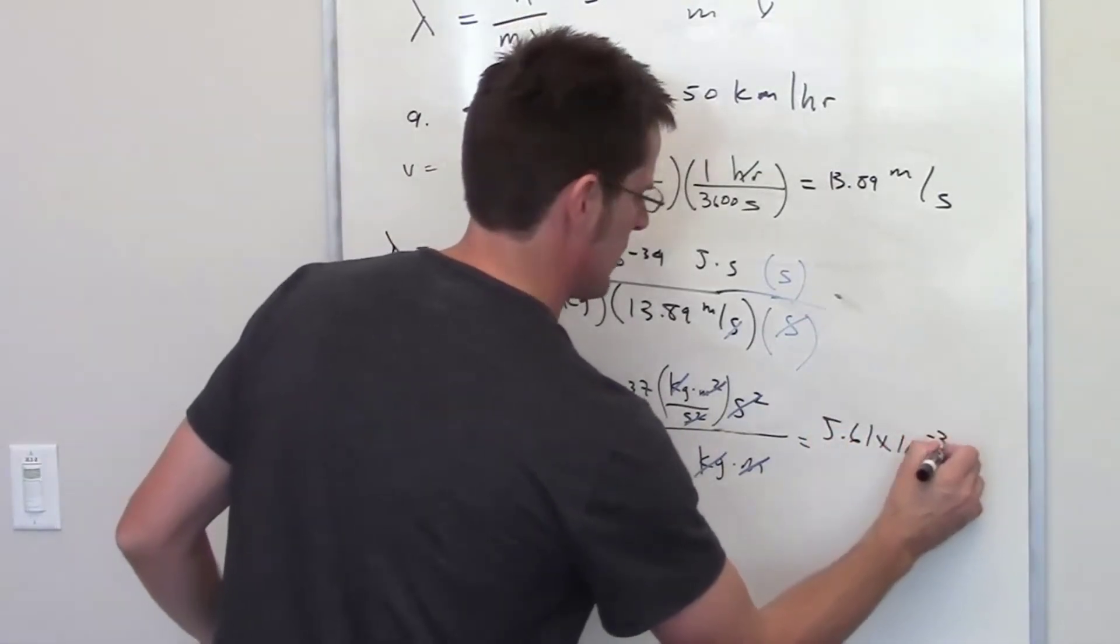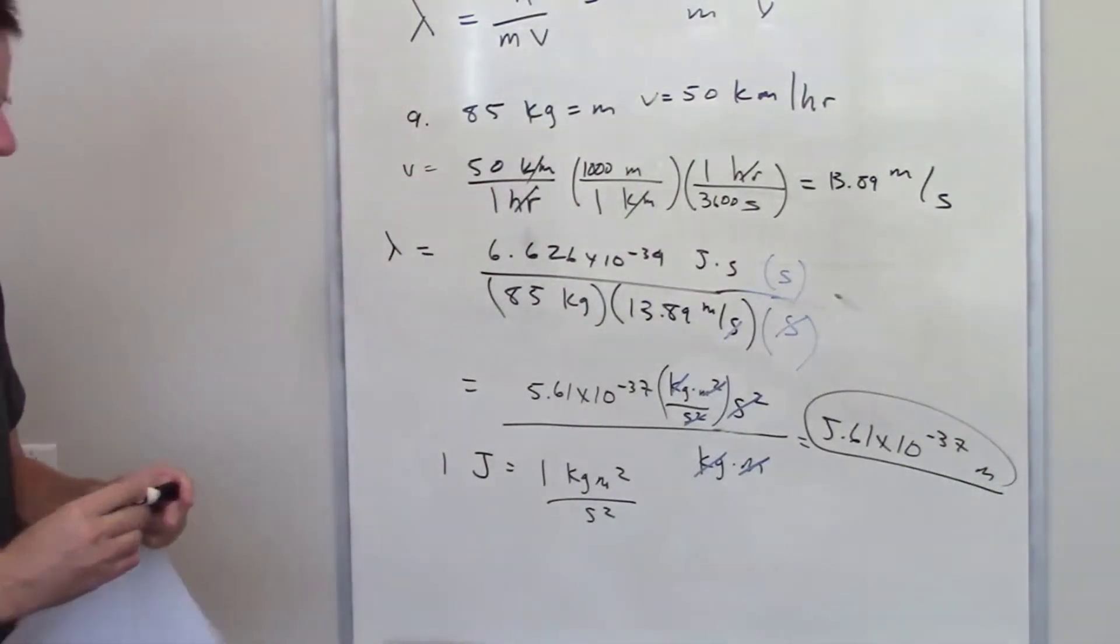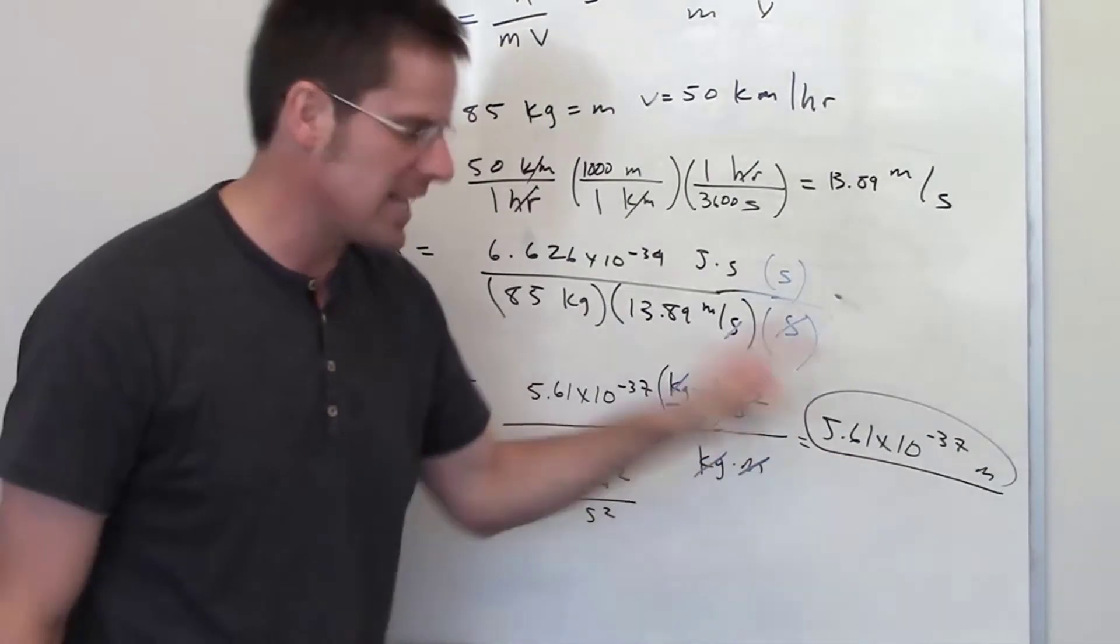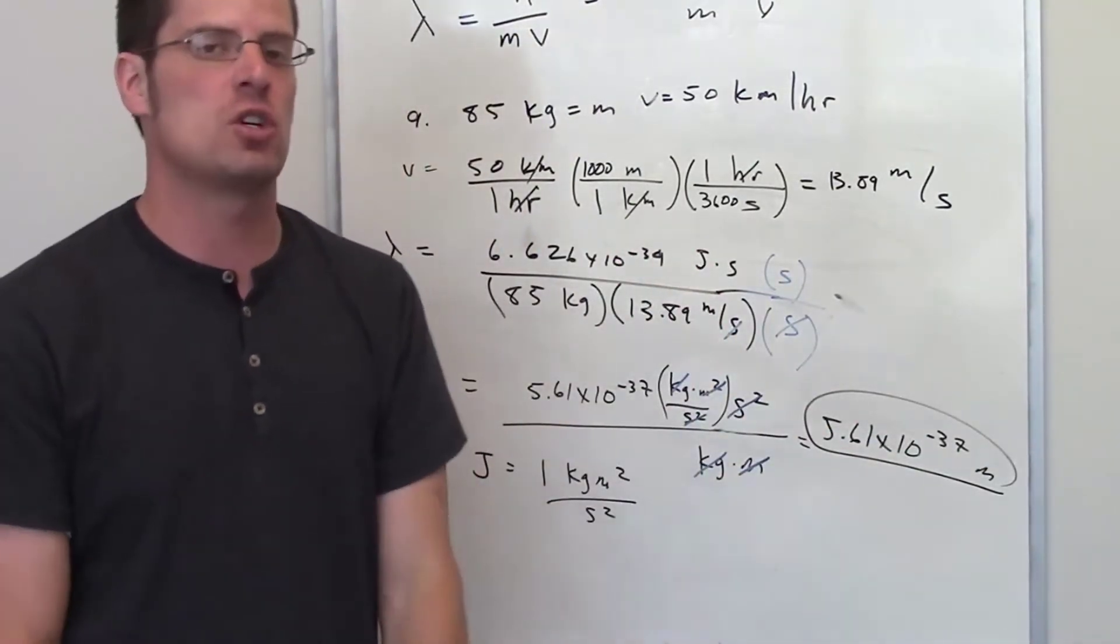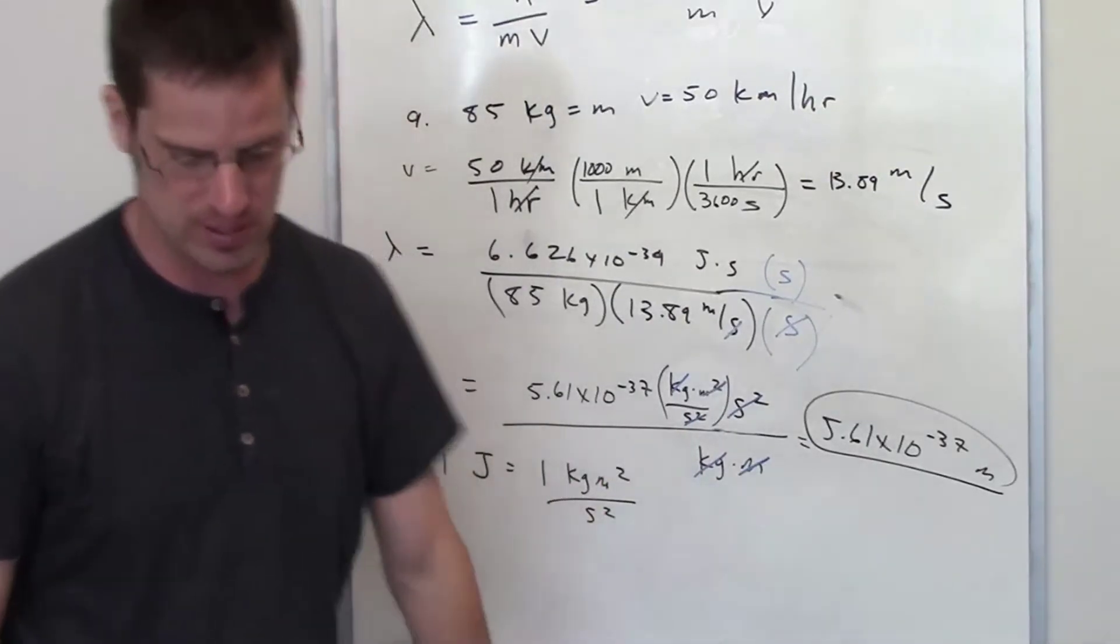5.61 times 10 to the negative 37 meters. That is the wavelength that a person of this weight skiing at that velocity would have. That wavelength is so tiny that you're not going to be able to observe any wave-like properties from an actual person of physical mass.